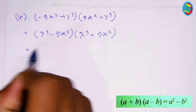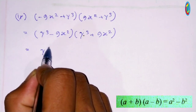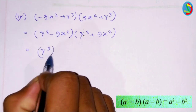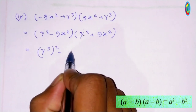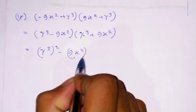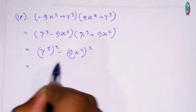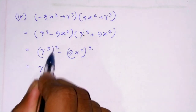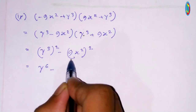A plus b or a minus b. Using the identity: a squared minus b squared equals a plus b times a minus b. So we have y to the power 3 whole squared minus 9x squared whole square.